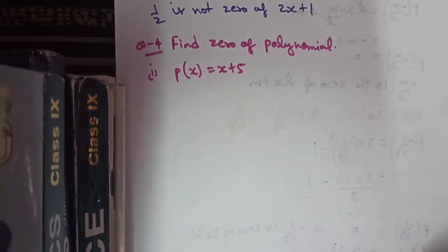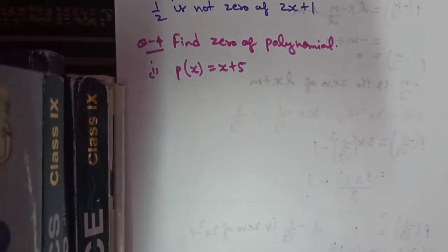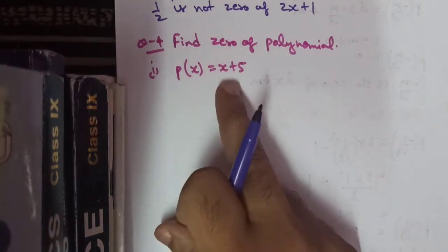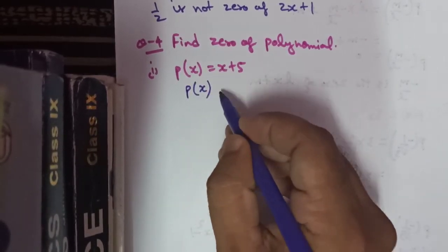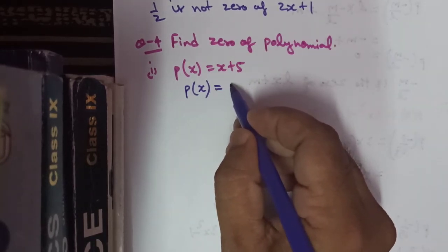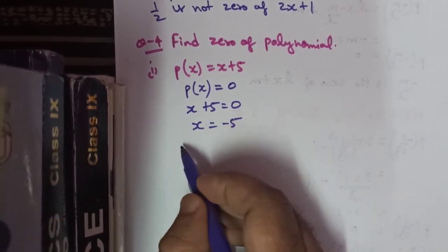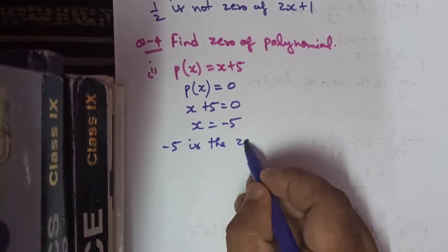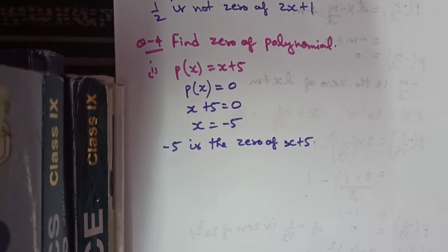In question number 4, we have to find the zero of the polynomial. We are given linear polynomials and to find the zero we equate the given polynomial equal to 0. For the first part, x plus 5 is the polynomial. Setting x plus 5 equals 0 gives x equals minus 5. So minus 5 is the zero of polynomial x plus 5.